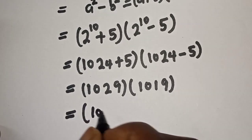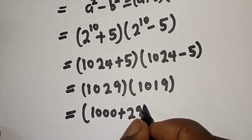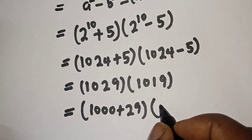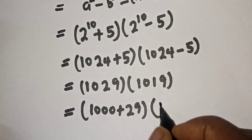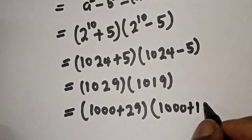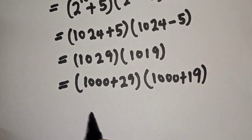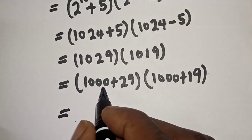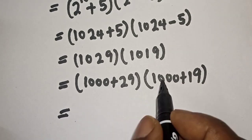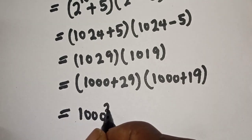Then this is equal to 1029, which can be written as 1000 plus 29. Then bracket 1019 can be written as 1000 plus 19.